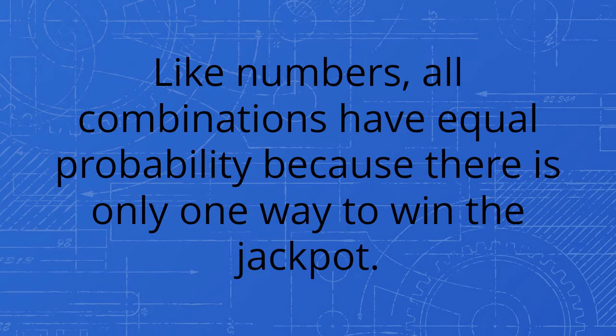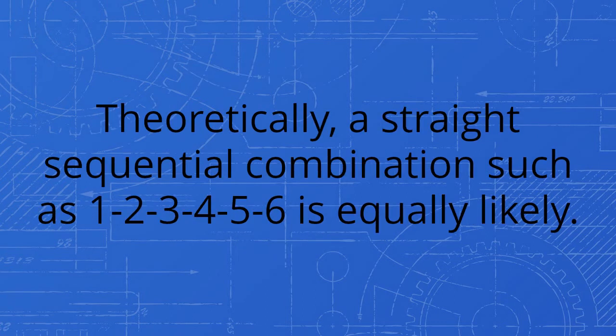Like numbers, all combinations have equal probability because there is only one way to win the jackpot. Theoretically, a straight sequential combination such as 1, 2, 3, 4, 5, 6 is equally likely.